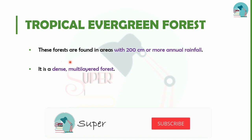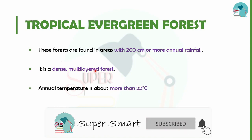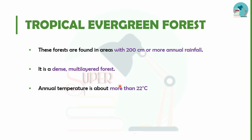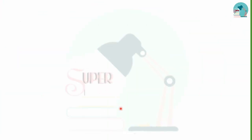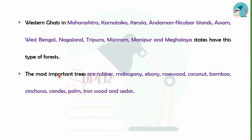This forest is dense and multi-layered. The annual temperature is more than 22 degrees Celsius, and the average annual humidity is above 70%. Important trees in this forest include Mahogany, Ebony, Mosswood, Coconut, Bamboo, Cinchona, Candy's Plum, Ironwood, and Cedars.